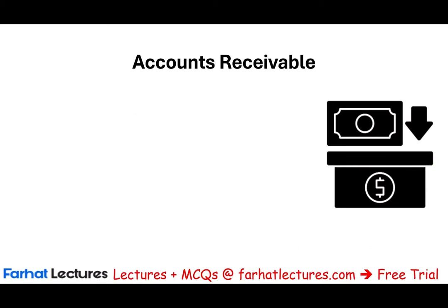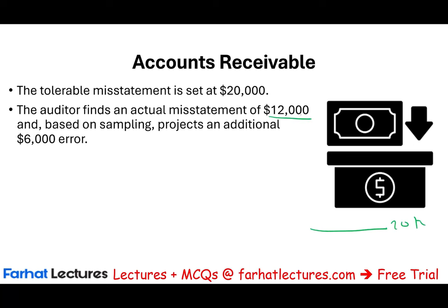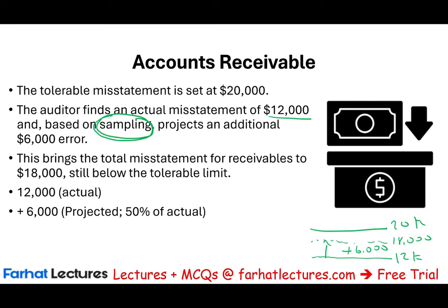Moving to accounts receivable — the tolerable misstatement is $20,000. The auditor finds actual misstatements of $12,000 from sampling. Since we sampled, we add 50% as sampling risk, which is $6,000. This brings the total estimated misstatement to $18,000. Although we found $12,000 actual errors, we think there could be up to $18,000 due to sampling risk. Since $18,000 is still less than $20,000, accounts receivable is fairly stated.